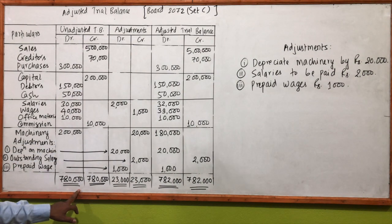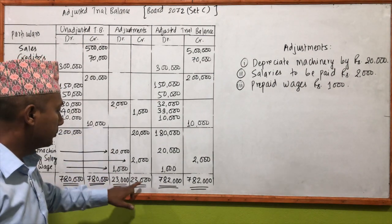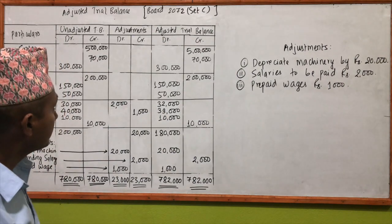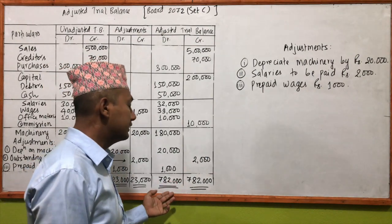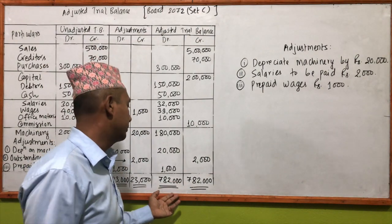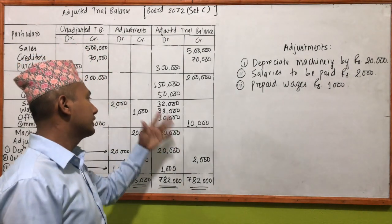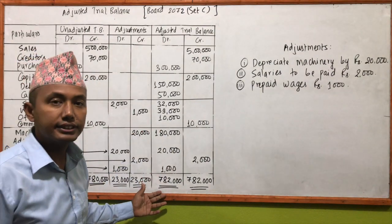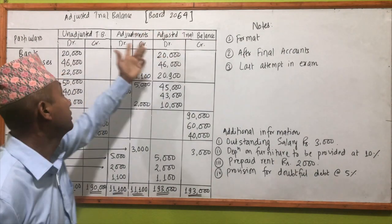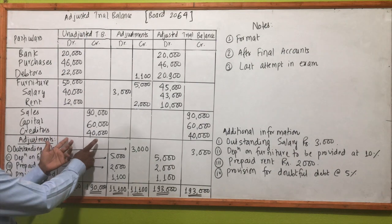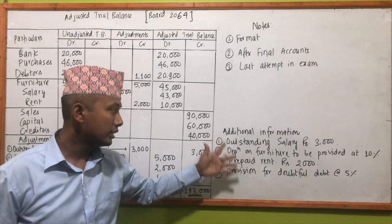You can see the question on the adjusted trial balance. Let us see this question and how to get the answer. The answer is that we need to balance the totals. We have additional information on the board — we can see more additional information about the entries.